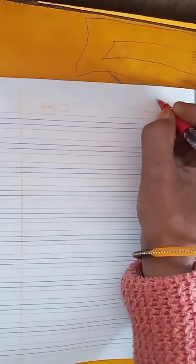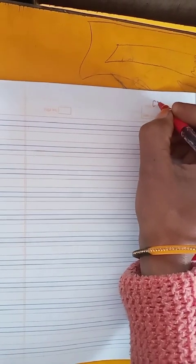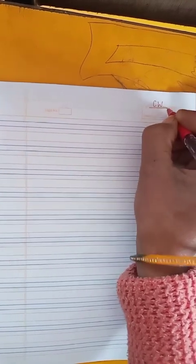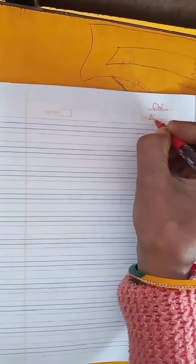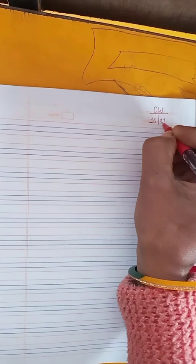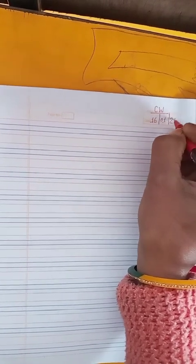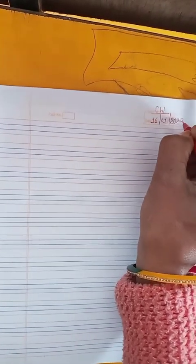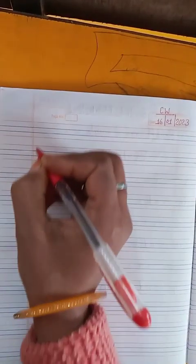You will also write with me. Firstly we write CW and date. Write here. CW and date, 16, month first, year 2023. Okay? Write heading.